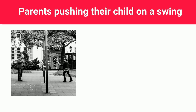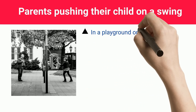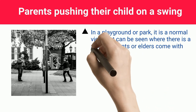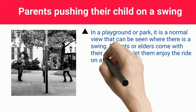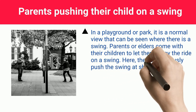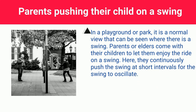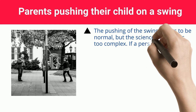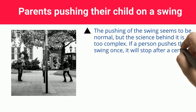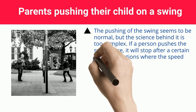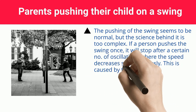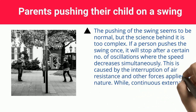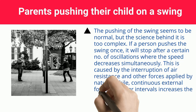Parents pushing their child on a swing. In a playground or park, it is a normal view where parents or elders come with their children to let them enjoy the ride on a swing. They continuously push the swing at short intervals for the swing to oscillate. The pushing of the swing seems normal, but the science behind it is complex. If a person pushes the swing once, it will stop after a certain number of oscillations as speed decreases, caused by the interruption of air resistance and other natural forces. Continuous external force at regular intervals increases the energy lost by damping.